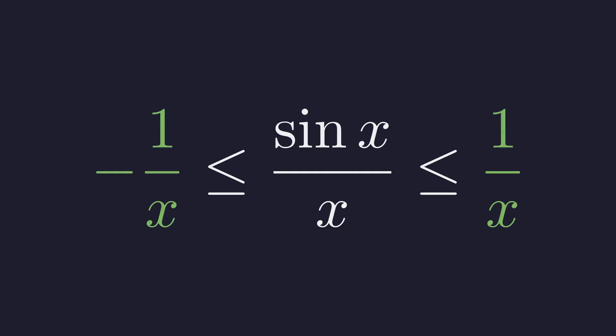Look at this. The sine function is trapped. It can wiggle all it wants, but those bounds are closing in like a vice. As x gets larger, the wiggle room shrinks to nothing. This is the beautiful part. We just turned an oscillating mess into a simple inequality.